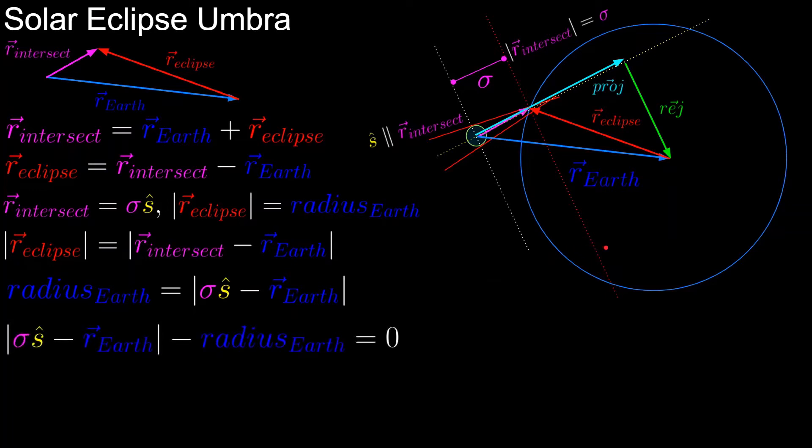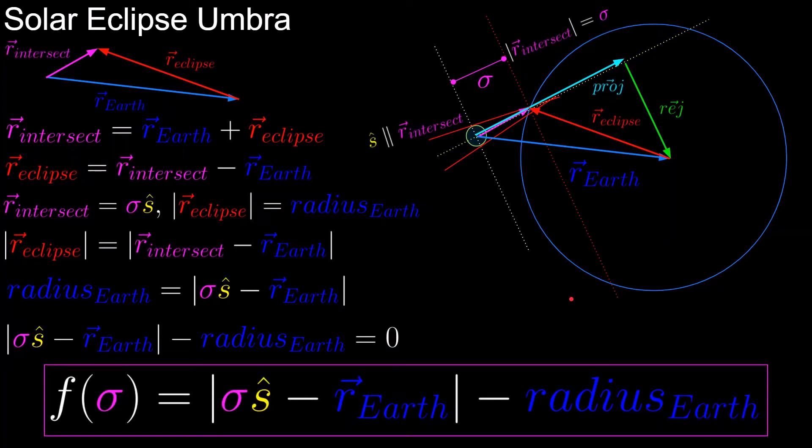And now we'll rearrange the equation so we have all our variables on one side equal to zero, and if you're familiar with root solvers this should be ringing your root solver alarm, because what we have here is a scalar valued single variable function that we need to find the root of. It's scalar valued because its output is a scalar, and single variable because it only has one variable that is changing, which is sigma. So we want to solve for what value of sigma is going to make this equation equal to zero, which we'll use to calculate the eclipse vector.